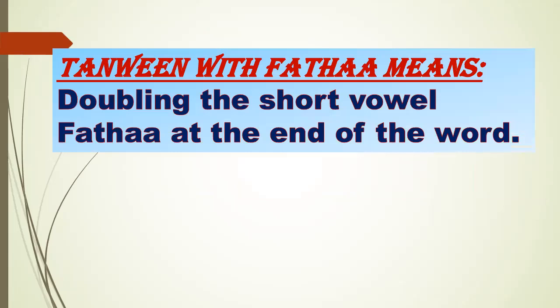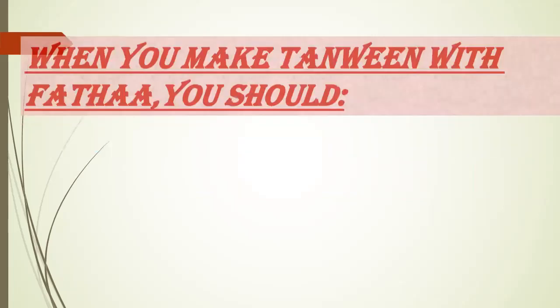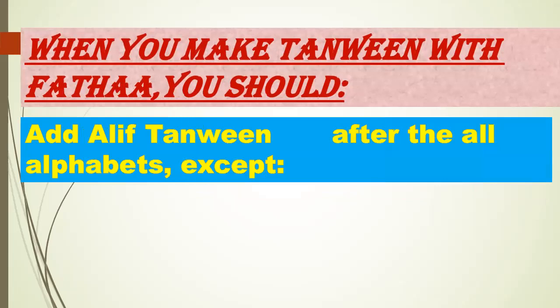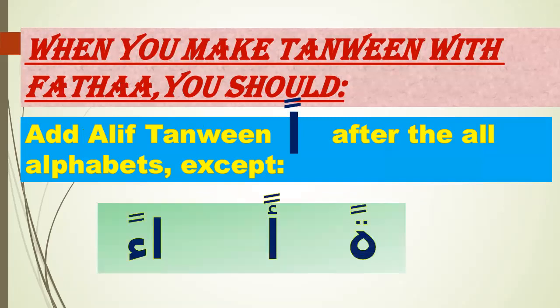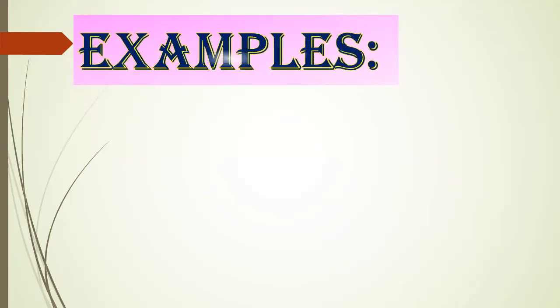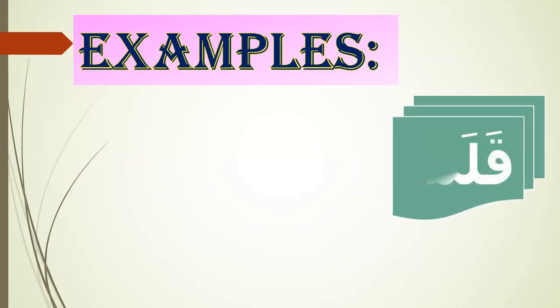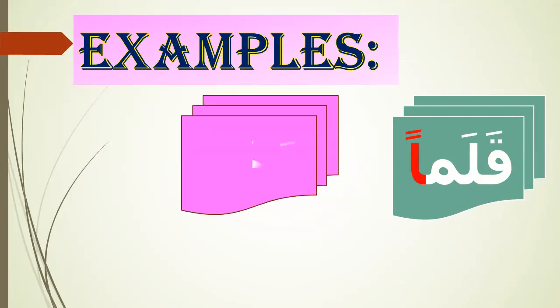Tanween with fatha means doubling the short vowel fatha at the end of the word. When you make tanween with fatha, you should add alif tanween after the old alphabets except tamarbuta, alif, hamza preceded by alif mad. Examples: Qala-man. Meme has tanween with fatha, so you should add alif tanween after the letter Meme. Haja-ran. Ra has tanween with fatha, so you should add alif tanween after the letter Ra.